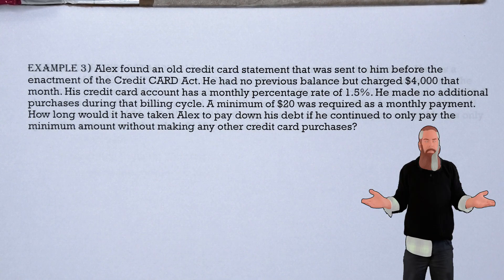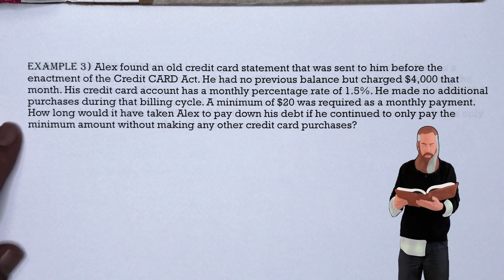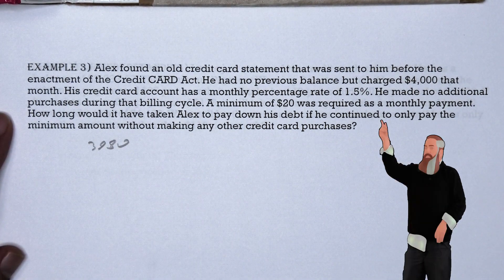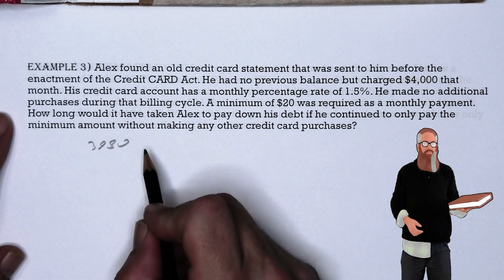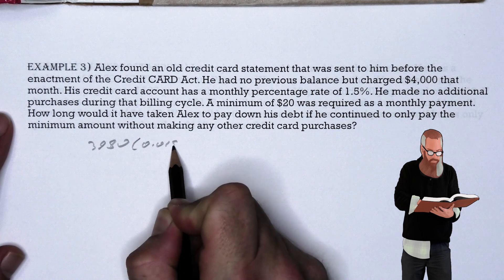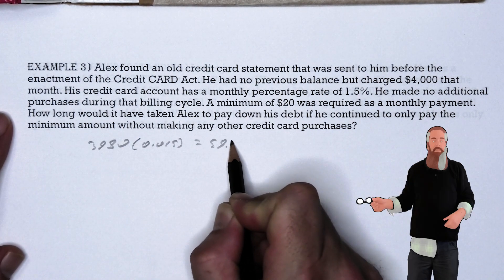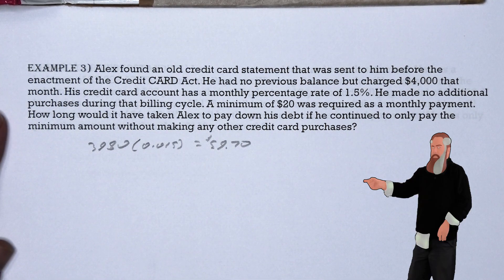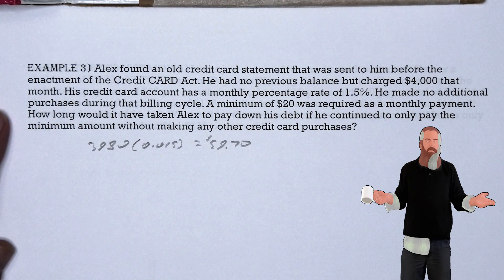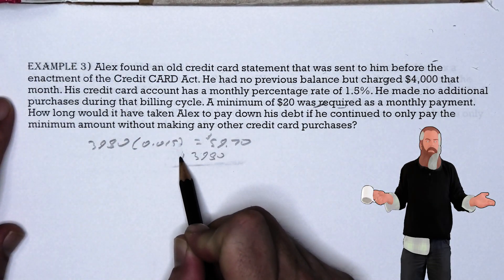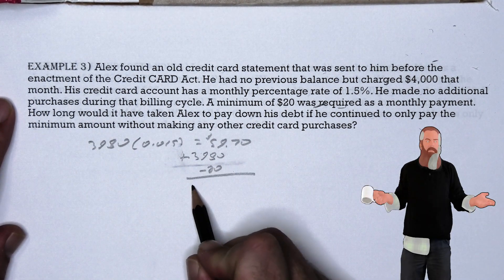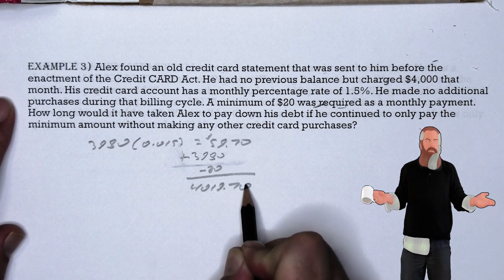Let's walk through a few months to see the status of Alex's credit card account. Alex pays the $20 minimum payment and carries over a balance of $3,980. At the end of the next billing cycle, he must pay 1.5% interest — that's 0.015 — resulting in a $59.70 finance fee. After making the minimum payment of $20, the balance carried forward is $4,019.70.